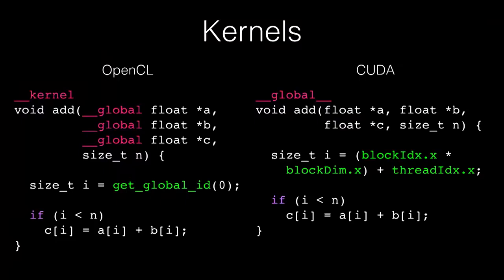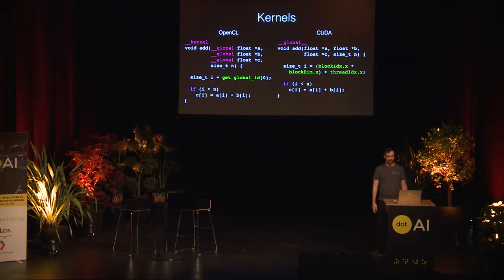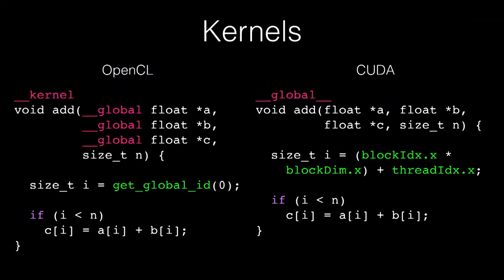A brief introduction to how and why the GPU works. When you program something for the GPU, it will look a bit like this code. I have code for OpenCL and CUDA, which are the two major frameworks, even though CUDA is much more used in practice because NVIDIA has a much larger market share. Both of these kernels describe a very simple operation: just adding two vectors together and storing the result in a third one.